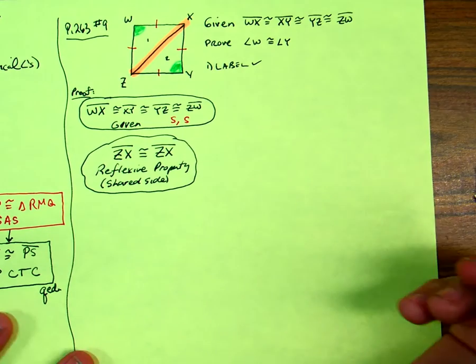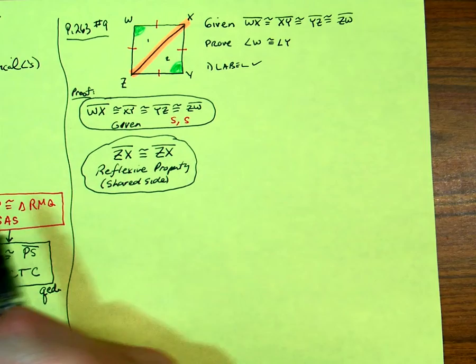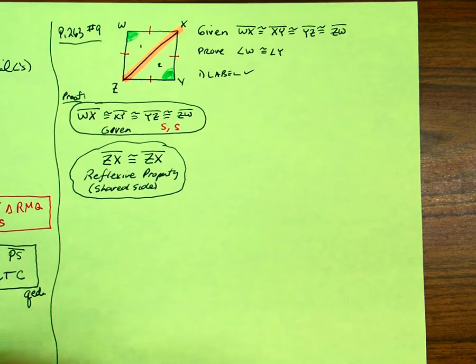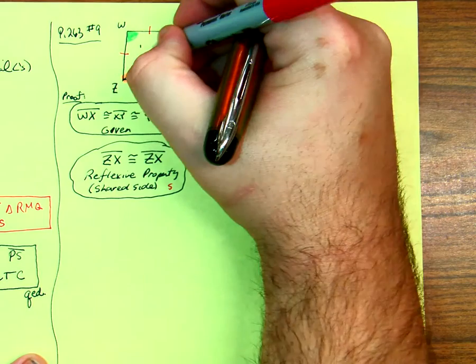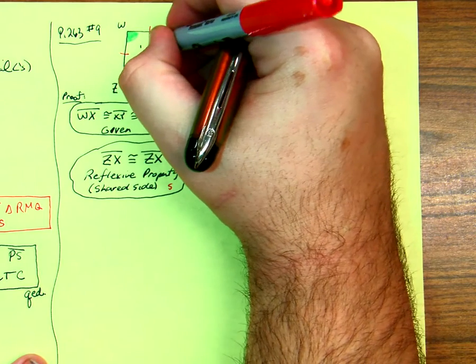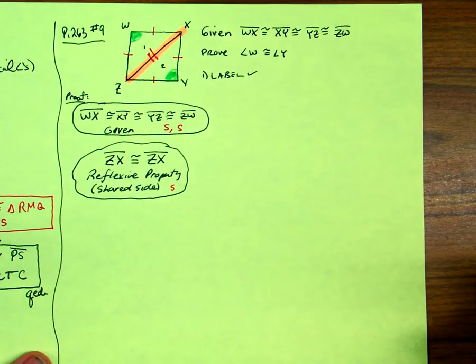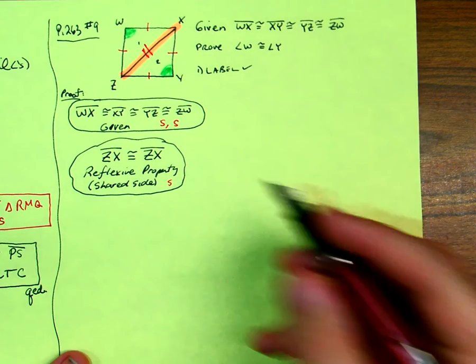Now, with these two things, I have a third side. So I can put two marks here. Is that enough to prove two triangles are congruent? Congruent.